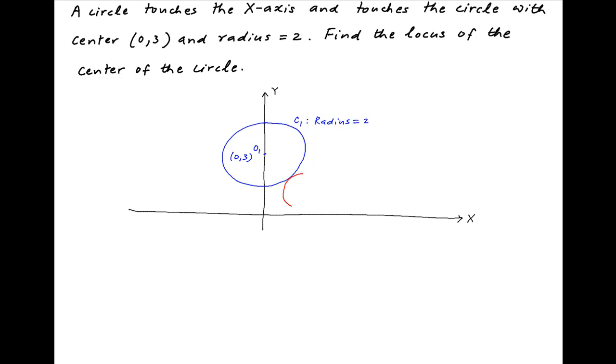Now, the desired circle is tangential to this circle and touches the x-axis. Let's assume that the center of this circle is O2 with coordinates (h,k).